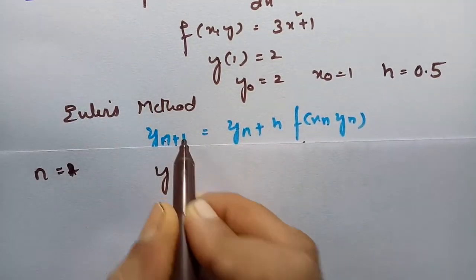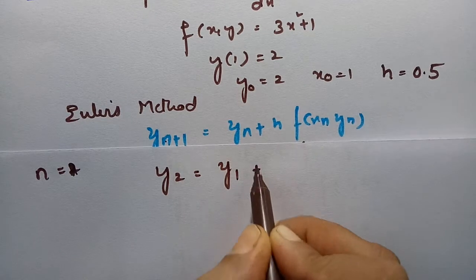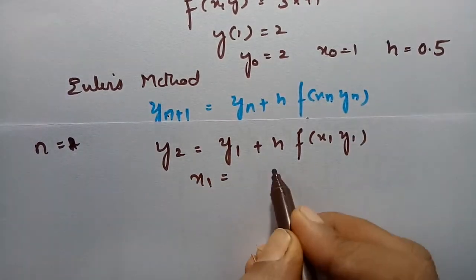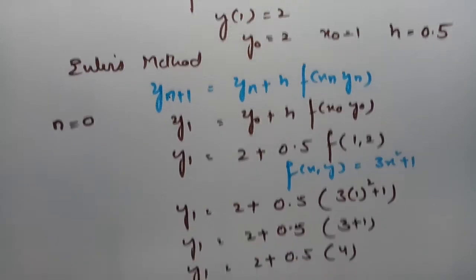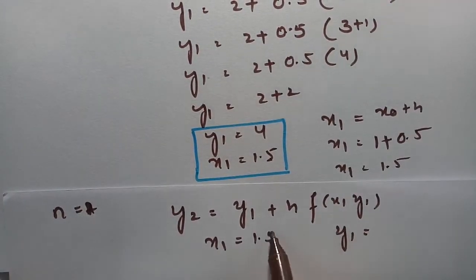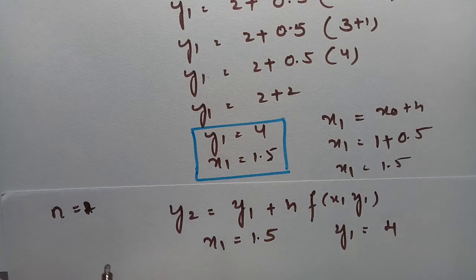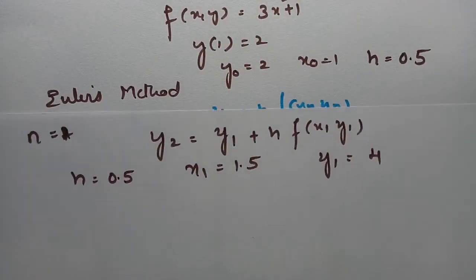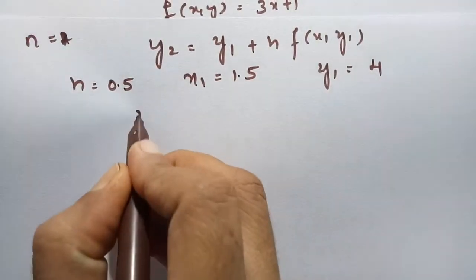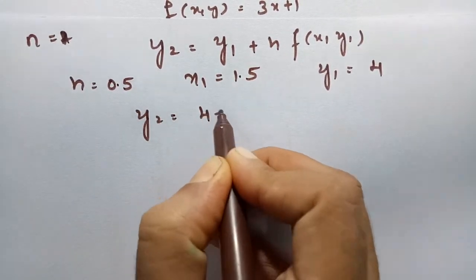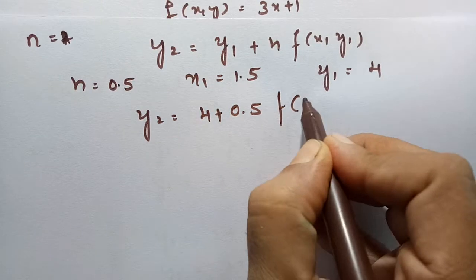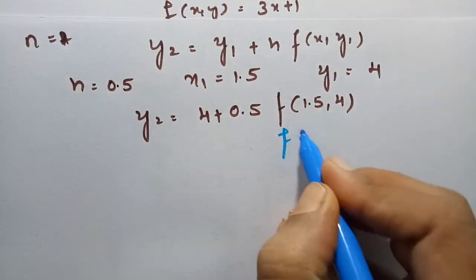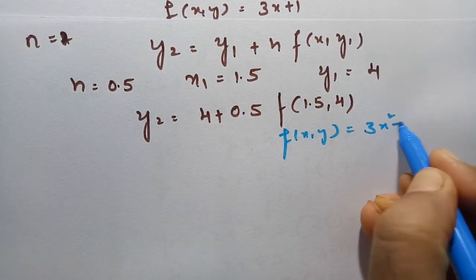Now we keep n = 1. So y₂ = y₁ + h·f(x₁, y₁). x₁ = 1.5 and y₁ = 4, h = 0.5. Substituting: y₂ = 4 + 0.5·f(1.5, 4). The function f(x, y) = 3x² + 1, so this is 3 into 1.5 squared plus 1.